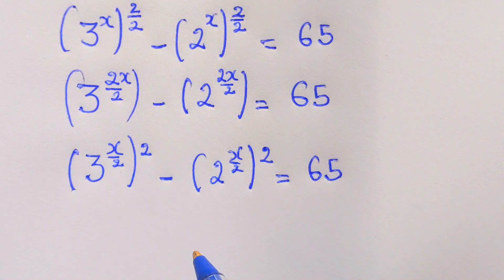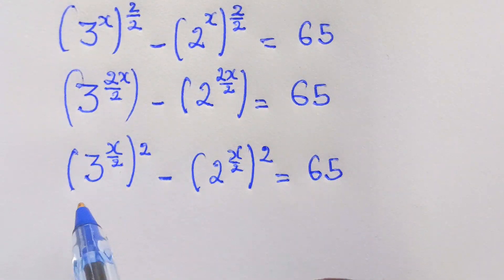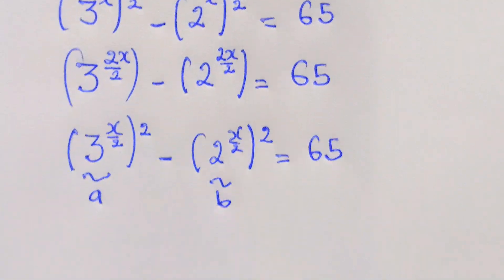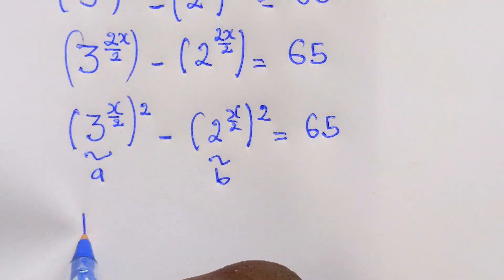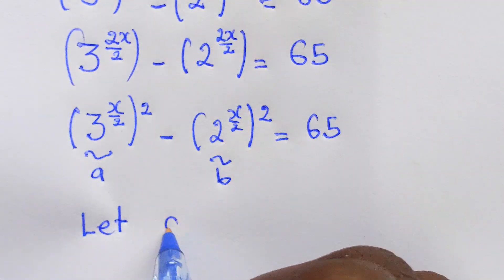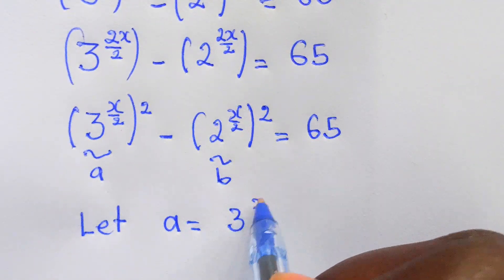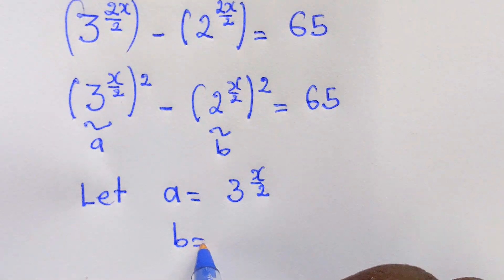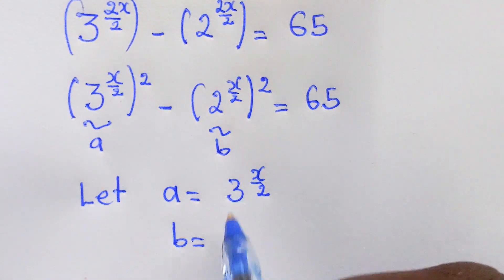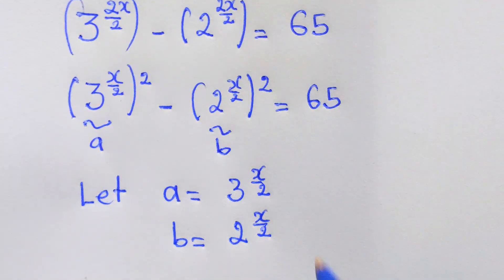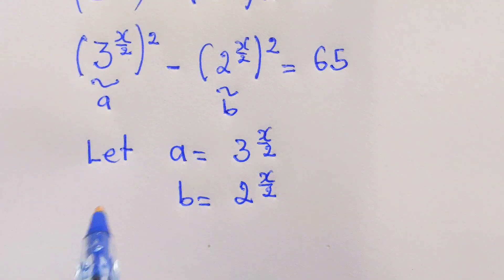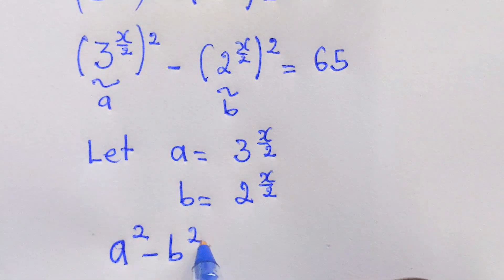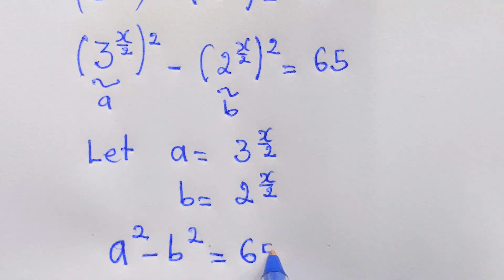If we look closely, this is a difference of two squares. We let a equal 3 power (x over 2) and b equal 2 power (x over 2). So we have a squared minus b squared equals 65.